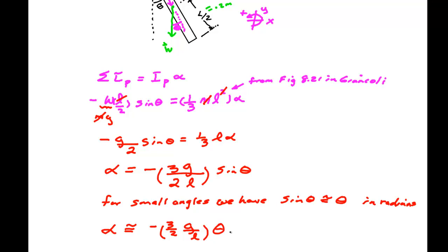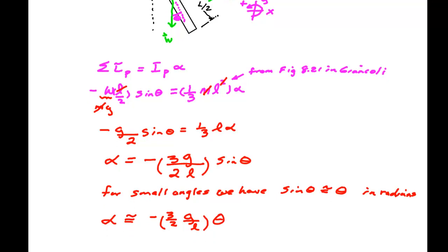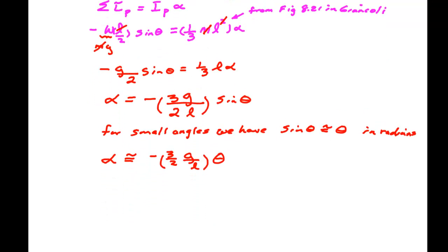Now this is a harmonic oscillator provided this constant right here is made equal to the square of the angular frequency. But alpha equals minus omega squared theta for a simple harmonic oscillator. Therefore omega squared is 3/2 G over L.